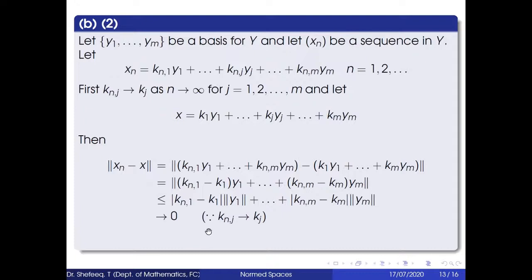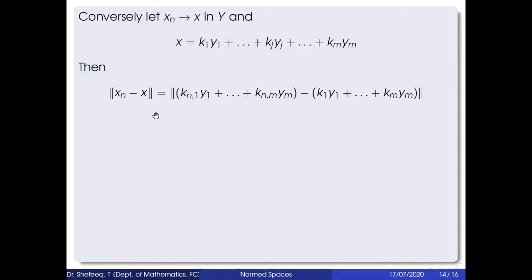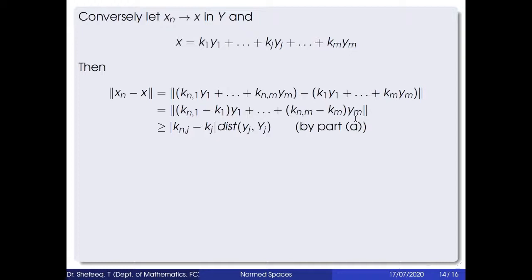Conversely, assume xₙ → x in Y where x = k₁y₁ + ... + kₘyₘ. Then ‖xₙ − x‖ = ‖(kₙ₁ − k₁)y₁ + ... + (kₙₘ − kₘ)yₘ‖. By part (a), this is greater than or equal to |kₙⱼ − kⱼ| · dist(yⱼ, Ŷⱼ), where Ŷⱼ = span{yᵢ : i ≠ j}.